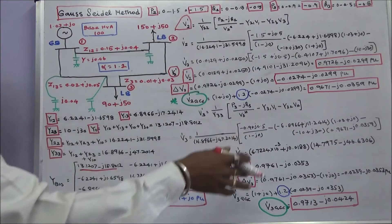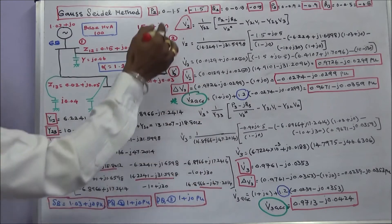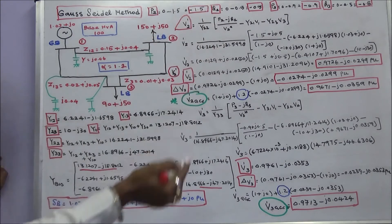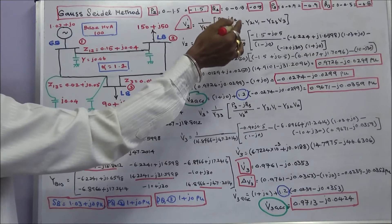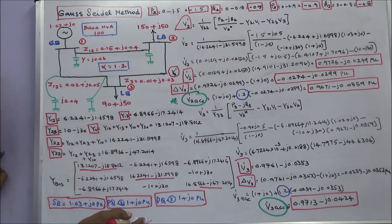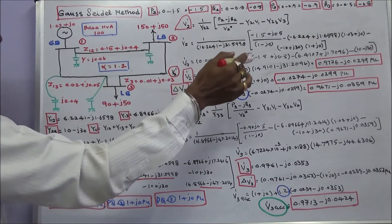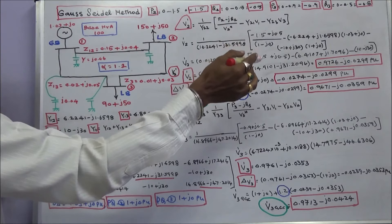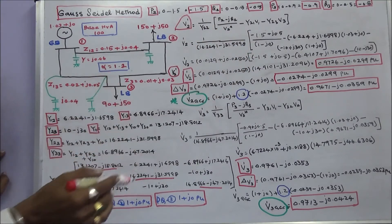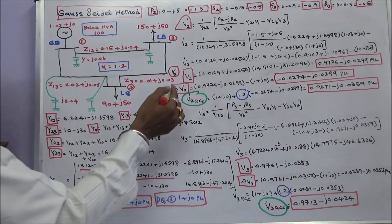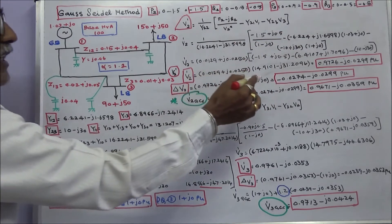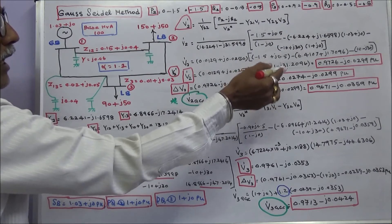The third step is to calculate V2 and V3. The first iteration formula for V2 is: (1/Y22) × [(P2 minus jQ2) / V2* − Y21×V1 − Y23×V3]. Substituting all values, the first iteration V2 = 0.9726 minus j0.02299 per unit. The difference (calculated minus assumed) is minus 0.0274 minus j0.02299 per unit.